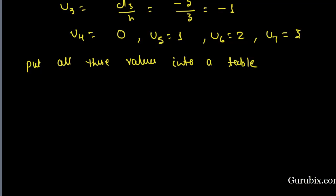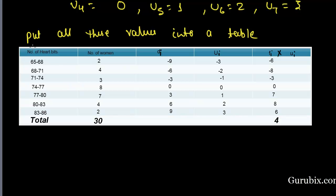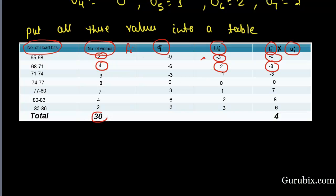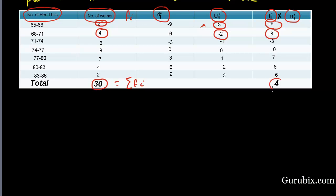Let's draw a table. In this table there are five columns. The first column is number of heartbeats, the second column is number of women which is our fi, the third column is di, the fourth column is ui, and the fifth column is the product of fi with their corresponding ui. We can see 2 into minus 3 is equal to minus 6. Similarly, 4 into minus 2 is equal to minus 8. Here is the total of fi, which is the summation of fi.